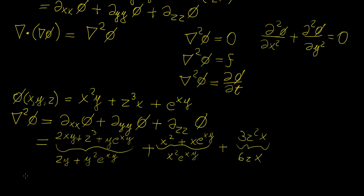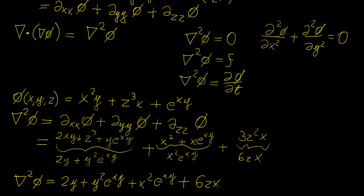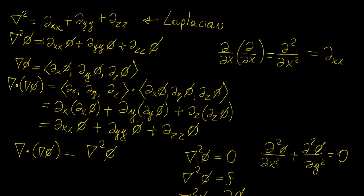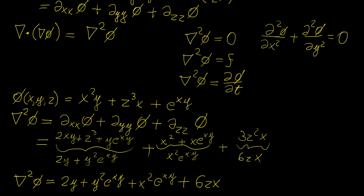Putting it all together, the Laplacian of this scalar field is: 2y plus y squared times e to the xy, plus x squared times e to the xy, plus 6zx. We could have gotten the same result by computing the gradient of this function first and then applying the divergence operation to it. The main use of the Laplacian is to represent partial differential equations that are very common in physics in a more compact form. It is simply called the Laplacian and is the scalar sum of all the second derivatives of a scalar function or scalar field.